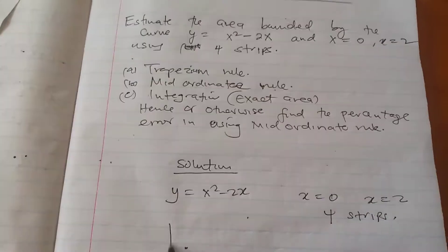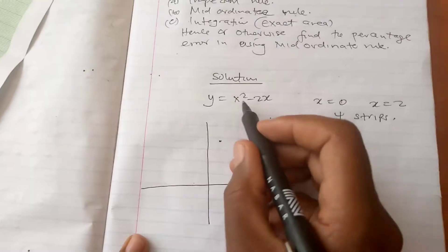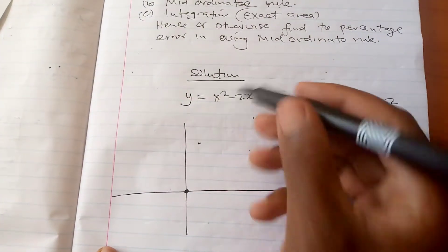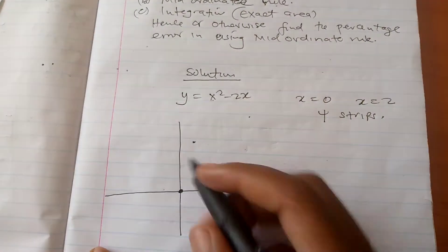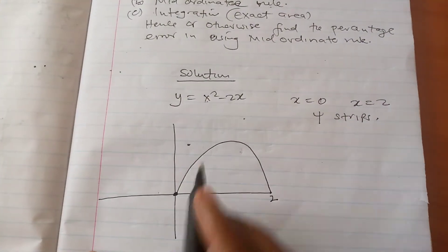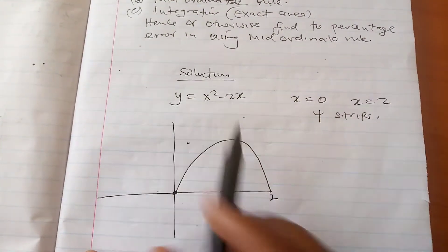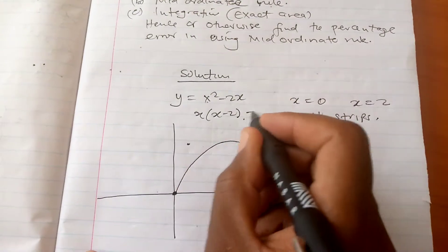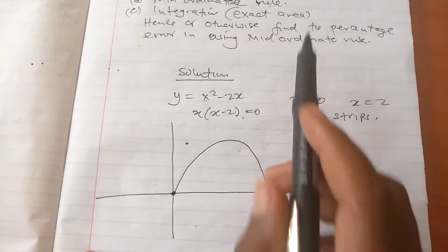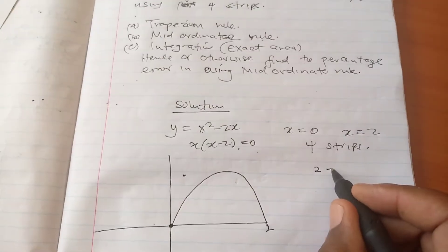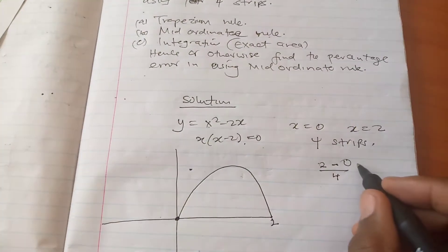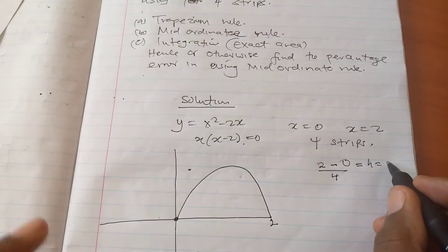To sketch the curve: when x equals 0, y is 0, so it starts at the origin. When x equals 1, y is 1 squared minus 2, which is negative 1. Setting the equation equal to 0 factors into x(x minus 2) equals 0, so either x equals 0 or x equals 2. Because we have 4 strips, we take (2 minus 0) divided by 4, giving a strip width h of 0.5.